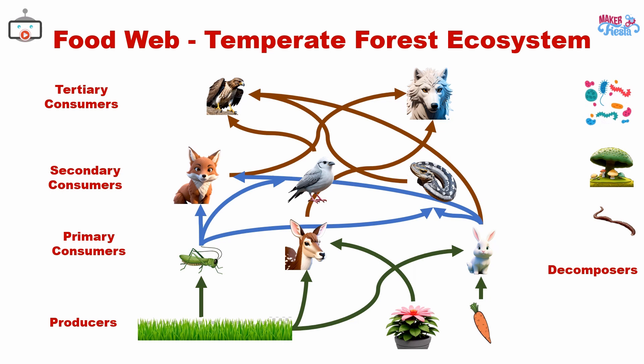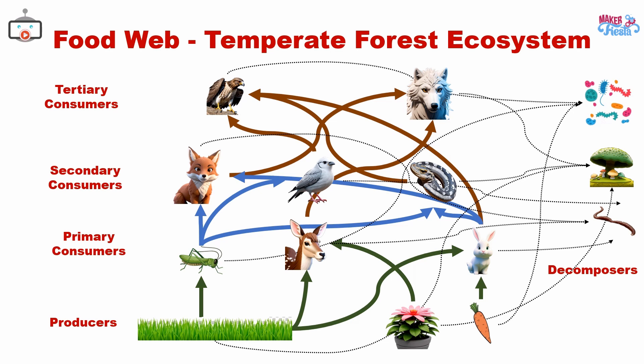It highlights the importance of each organism in maintaining balance. In a food web, the same categories of producers, consumers, and decomposers are present, but their relationships are more complex. This interconnectedness helps to maintain the stability of the ecosystem.